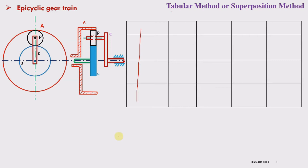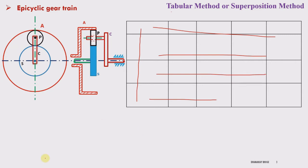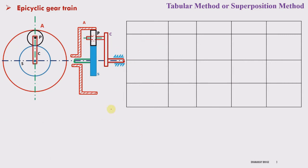The number of rows equals three plus one, which is four. The first row will be used to list the names of the members. The second row is for step number one, the third row is for step number two, and the fourth row is for step number three. The first column is always reserved for the steps, and the second column is always reserved for the planet carrier — in this case, arm C.